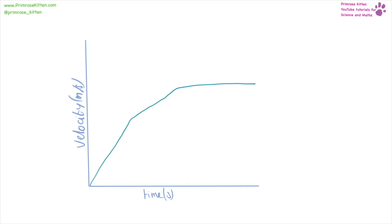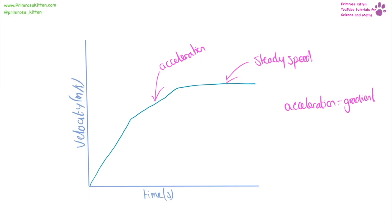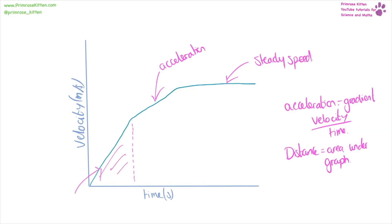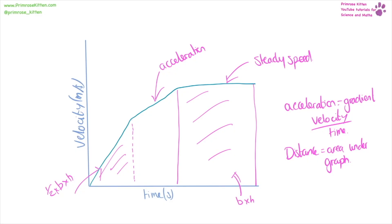Velocity-time graphs look very similar to distance-time graphs but are different. For example, at the flat bit, the object is now moving but at a steady speed. When values are increasing, they are accelerating. Acceleration is equal to the gradient — up over across, or velocity over time. If we want to work out the distance traveled, that's the area under the graph. A triangle section is half times base times height, a rectangle is base times height, and a combined section with a triangle and rectangle uses both formulas.